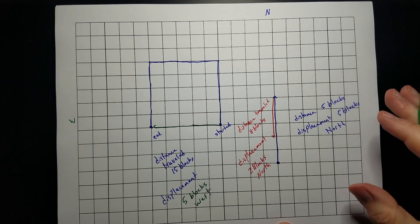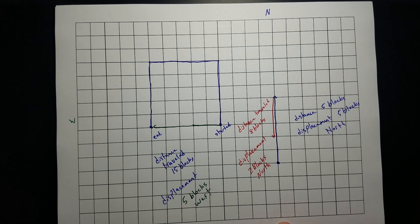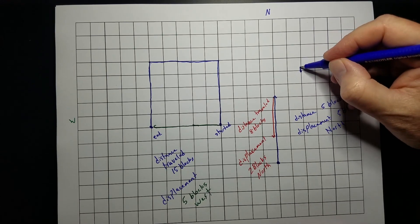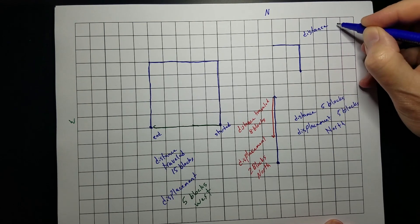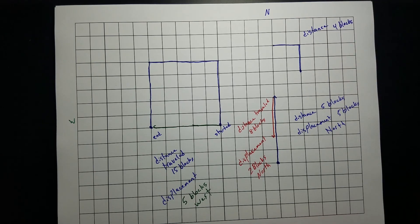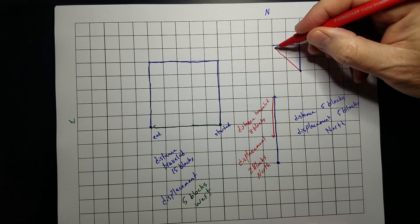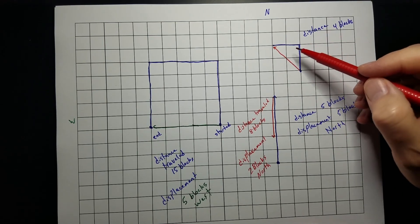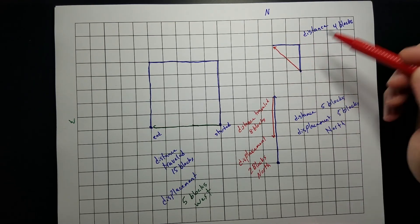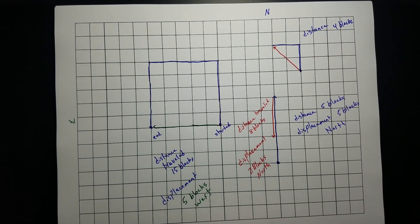So again: distance is how far you travel; displacement is how far you are from where you started and in what direction. For example, if I start on this block, go two blocks up and two blocks over, my distance is four blocks. But my displacement would be from where I started to where I ended — the hypotenuse of that triangle — somewhere in the northwest direction. That is the difference between distance and displacement.